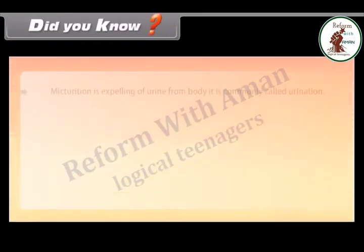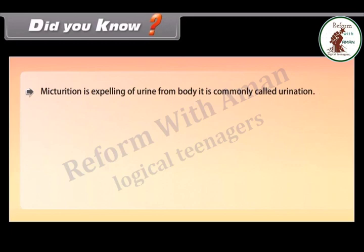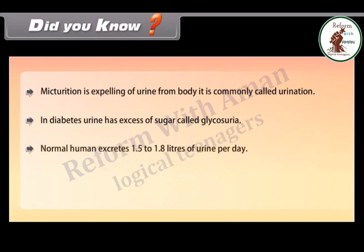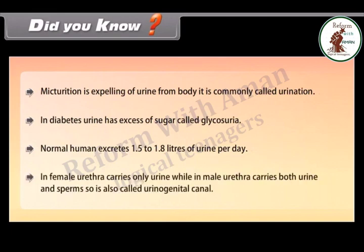Did you know? Micturition is the expelling of urine from the body, commonly called urination. In diabetes, urine has excess sugar, called glycosuria. A normal human excretes 1.5 to 1.8 liters of urine per day. In females, the urethra carries only urine, while in males the urethra carries both urine and sperms, so it is also called the urinogenital canal.